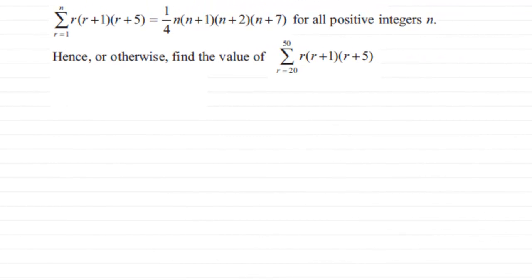In the previous part of the question we had to show that the sum of r times r plus 1 times r plus 5 was equal to a quarter n(n+1)(n+2)(n+7).